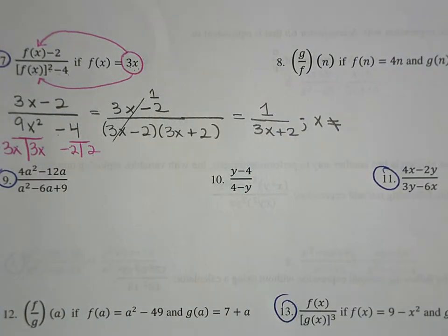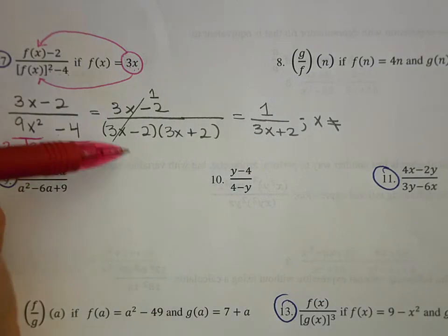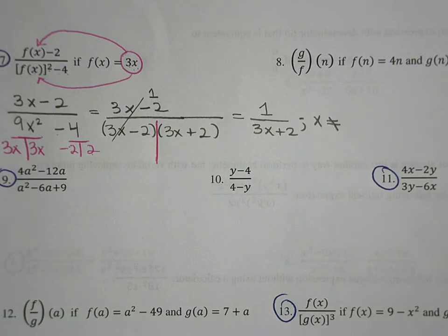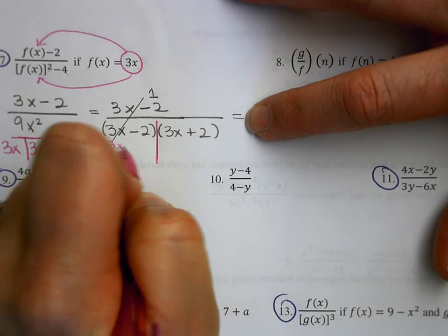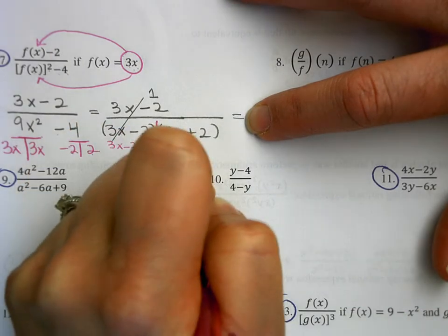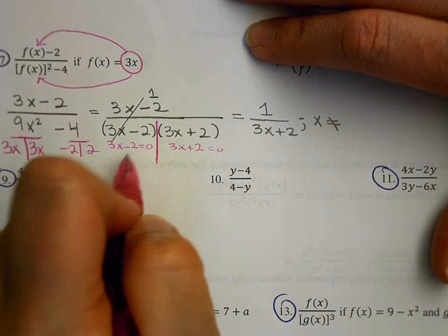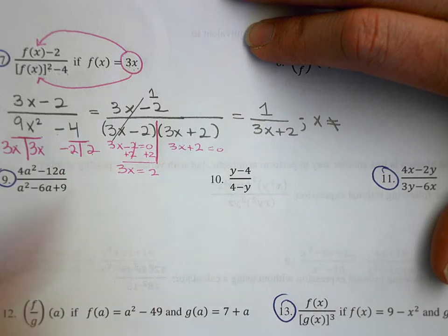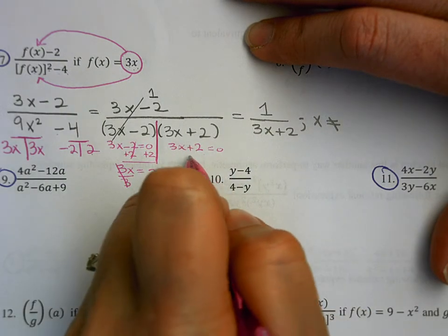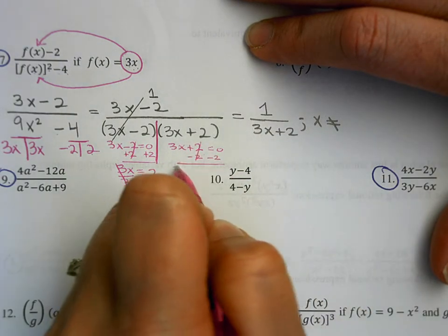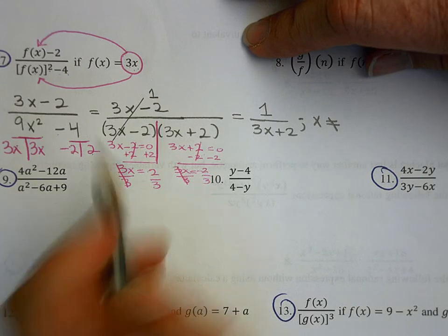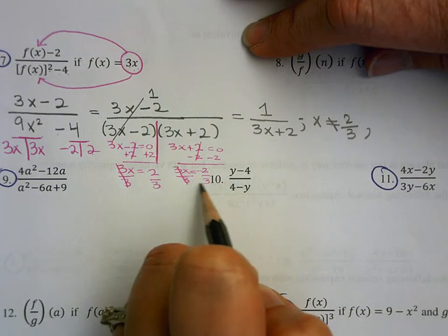For the excluded values, I work from the expression before reducing. I set each factor equal to zero and solve: 3x minus 2 = 0 gives x = 2/3, and 3x plus 2 = 0 gives x = negative 2/3. So x cannot equal 2/3 or negative 2/3 — or you could write plus or minus 2/3.